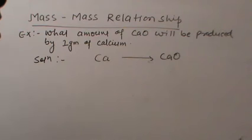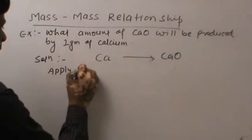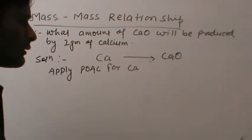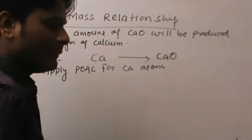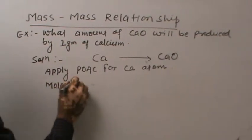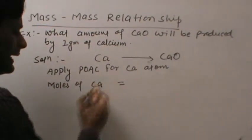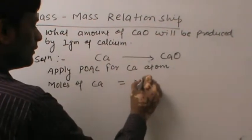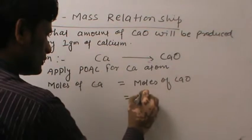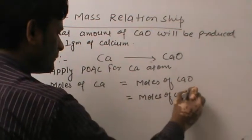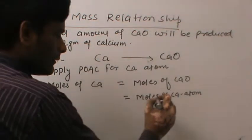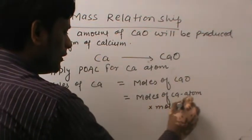Now, apply the principle of Atom Conservation for CaO. That means, moles of Ca equals to moles of CaO. That means, moles of CaO equals one multiply moles of CaO.